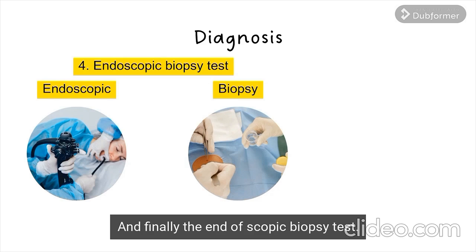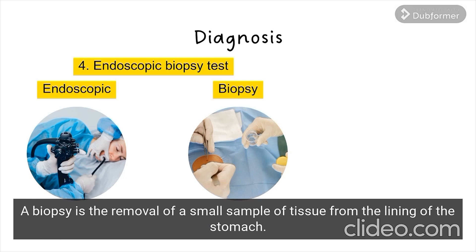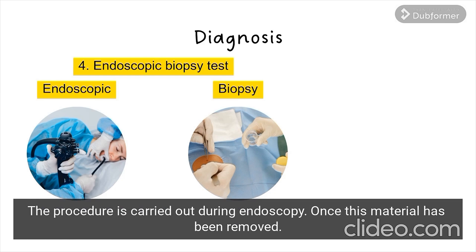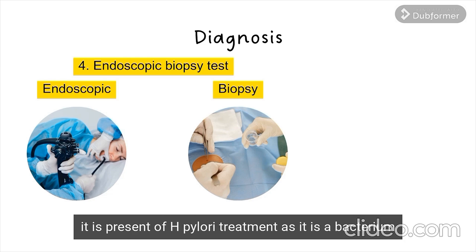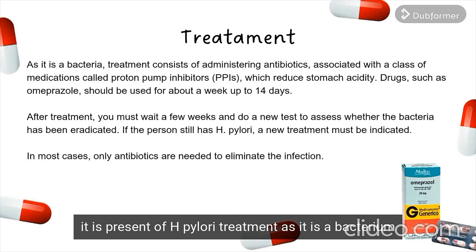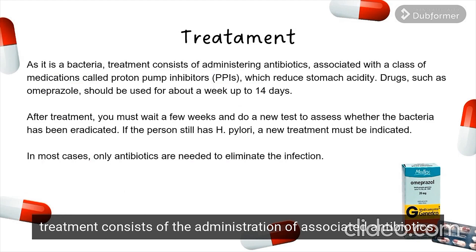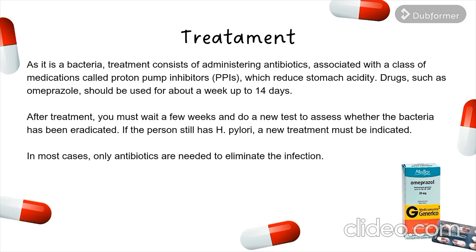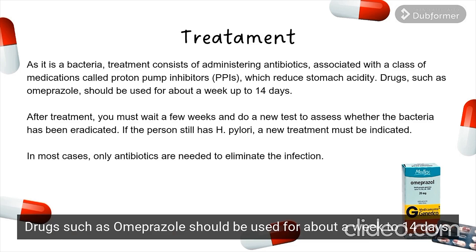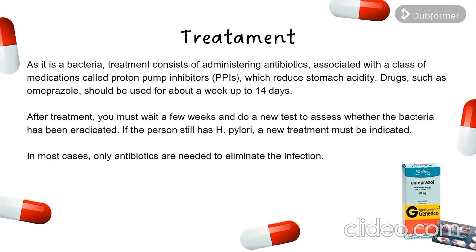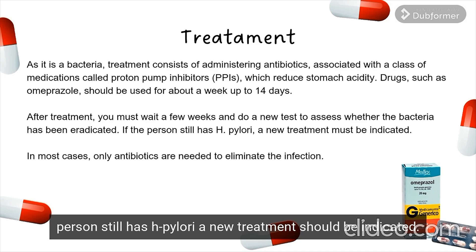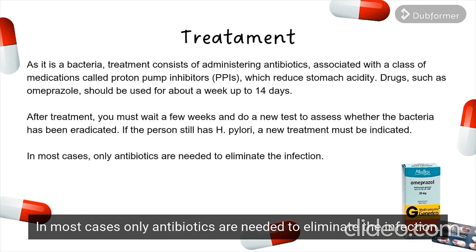And finally, the endoscopic biopsy test. A biopsy is the removal of a small sample of tissue from the lining of the stomach, carried out during endoscopy. Once this material has been removed, it is examined under a microscope to detect whether H. pylori is present. Treatment: as it is a bacterium, treatment consists of the administration of associated antibiotics combined with a class of drugs called proton pump inhibitors, which reduce acidity of the stomach. Drugs such as omeprazole should be used for about a week to 14 days. After treatment, you should wait a few weeks and do another test to evaluate if the bacteria has been eradicated. If the person still has H. pylori, a new treatment should be indicated. In most cases, only antibiotics are needed to eliminate the infection.